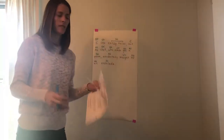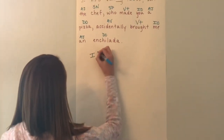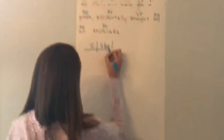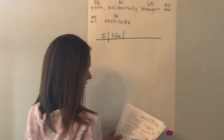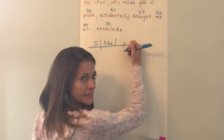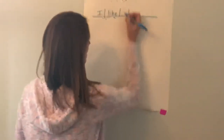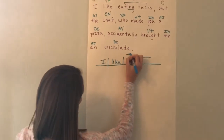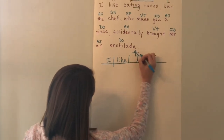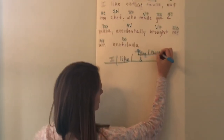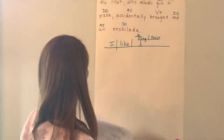So we will diagram this. We start with our independent clause. I — like — and we have our gerund. The direct object is multi-word and has a gerund in it, so we start with our step: eating goes first with a line, and then tacos. So: I like eating tacos.